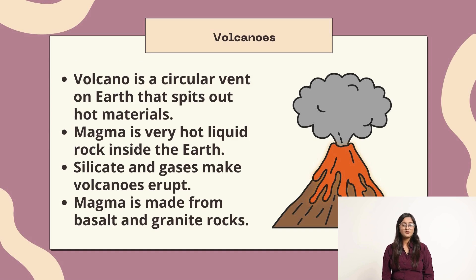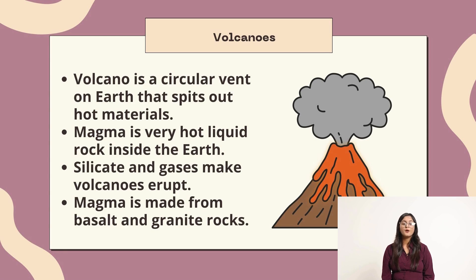Volcanoes. A volcano is a circular vent on earth that spits out hot materials. Magma is very hot liquid rock inside the earth. Silicate and gases make volcanoes erupt. Magma is made from basalt and granite rocks.